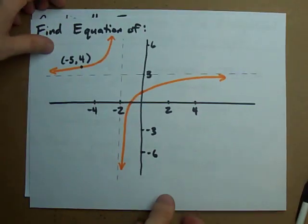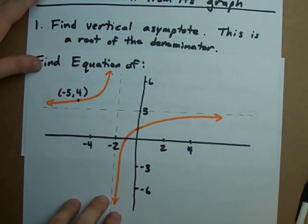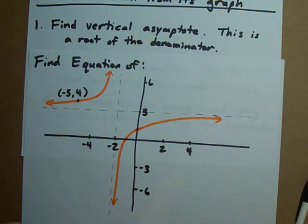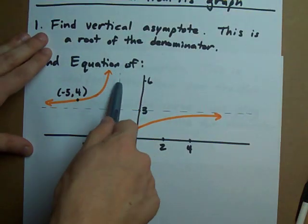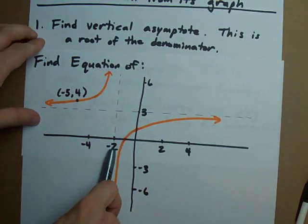Let's follow that process for this graph. Step one is to find the vertical asymptote. I've made it pretty clear here and your teacher probably will as well. The vertical asymptote is at negative two.